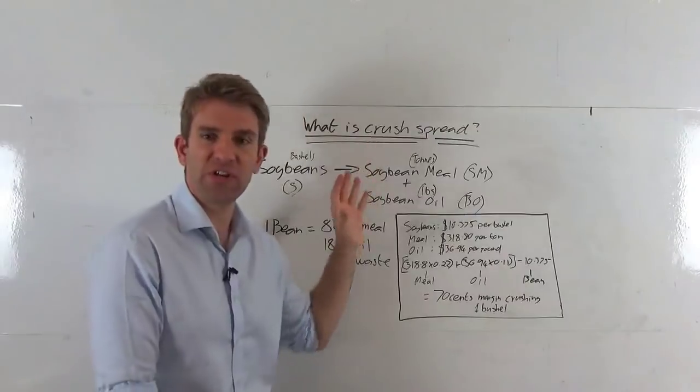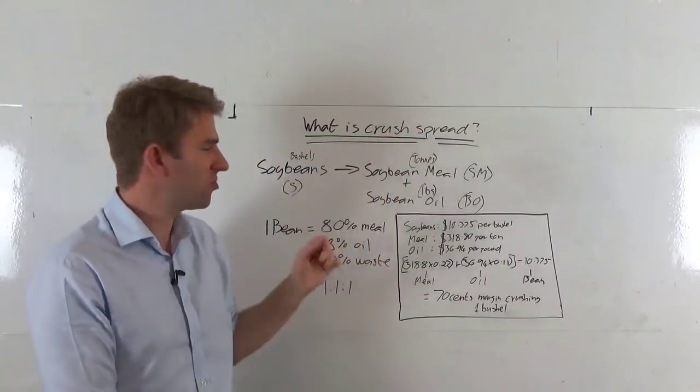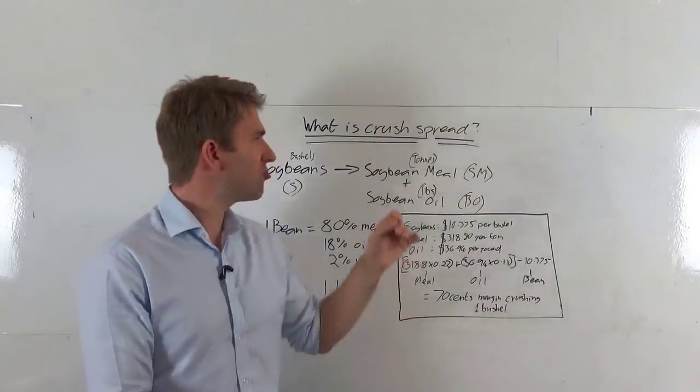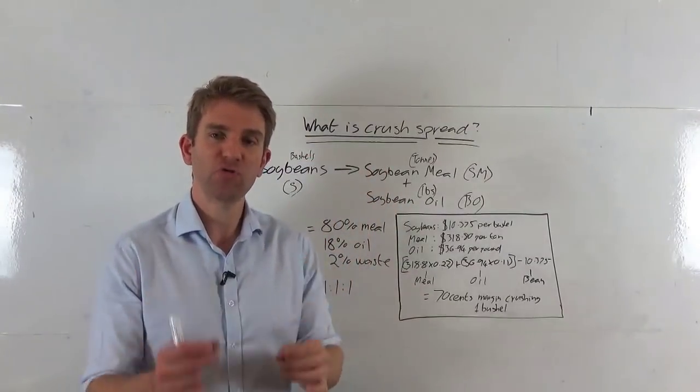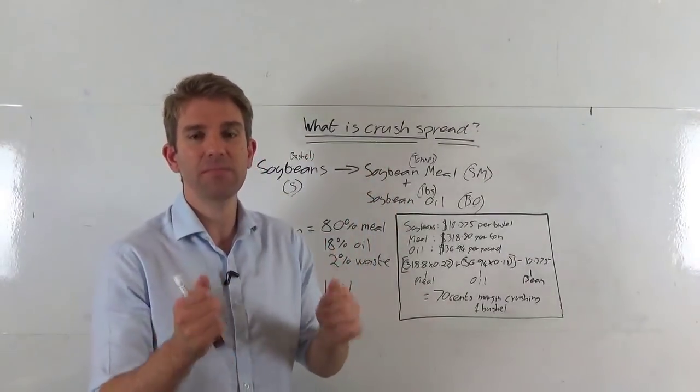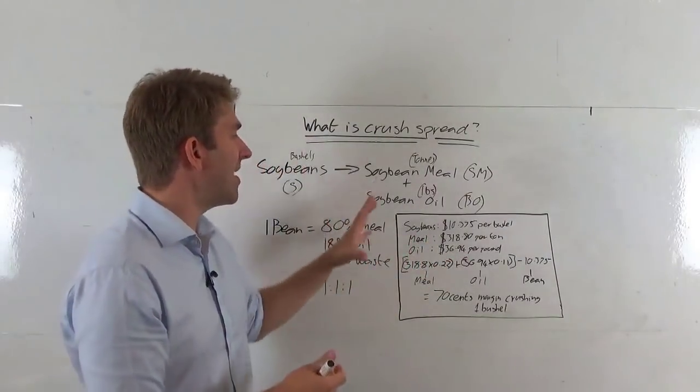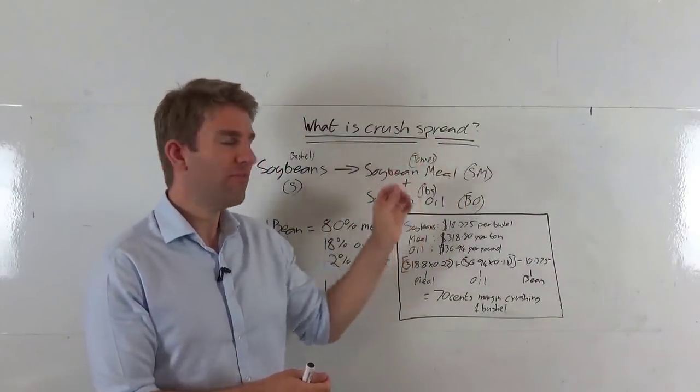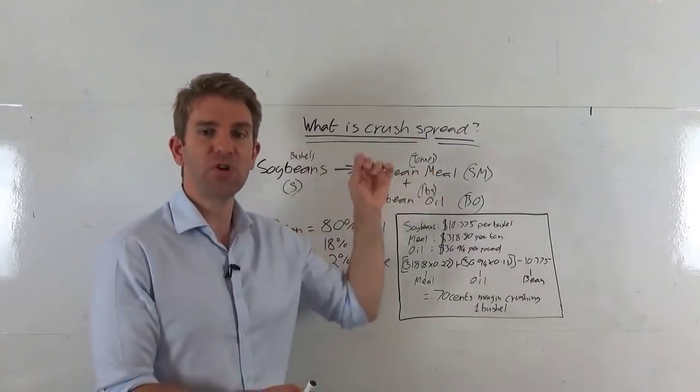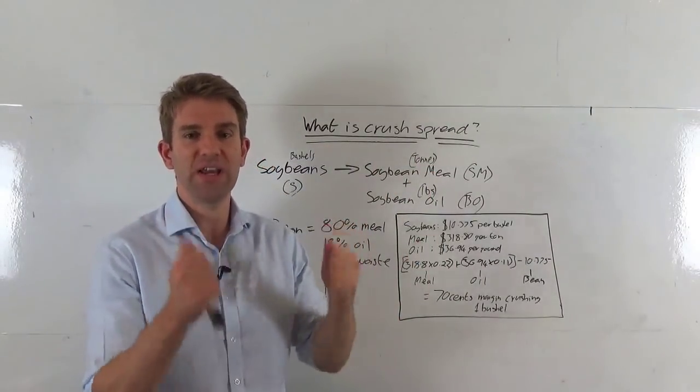But the people who are doing this, who are crushing the beans or refining the crude oil, need to make a margin. When we're trading the crush spread, we're trading the margin that these guys are making when they're doing it.